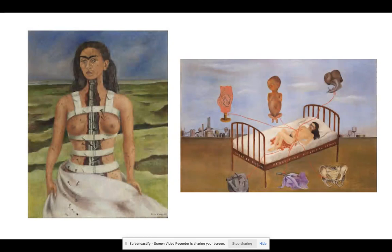I also found that the looks on the women's faces were very different. In The Broken Column she has a broken, defeated look on her face, while in Henry Ford Hospital she has a look of pain — I would go as far as to say agony on her face. Overall I found it very interesting to compare these two paintings together and see the similarities and differences between the two paintings done by the same artist.